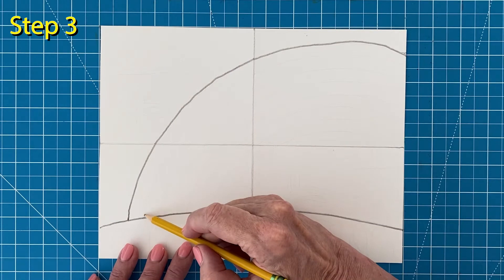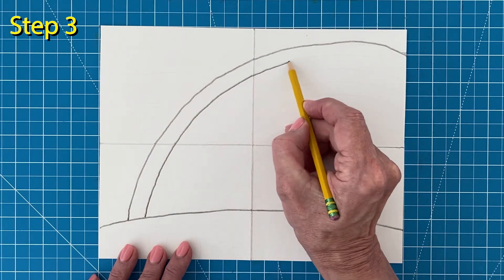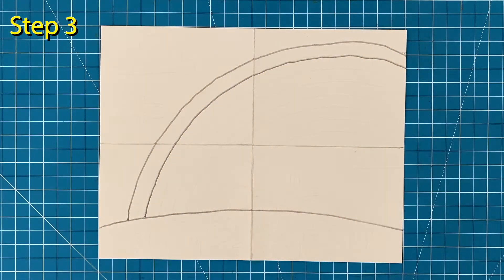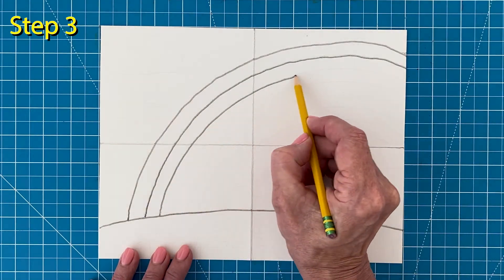Step number three, draw a second curve underneath the first, trying to make it as even as you can. Then add the third curve below with the same width.